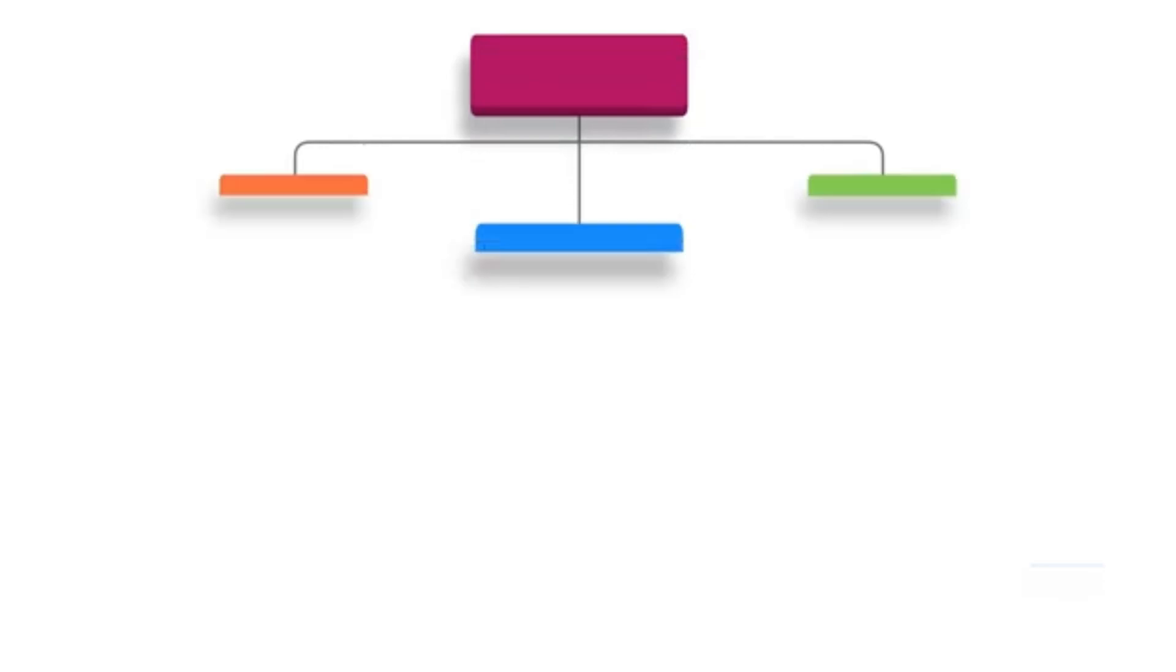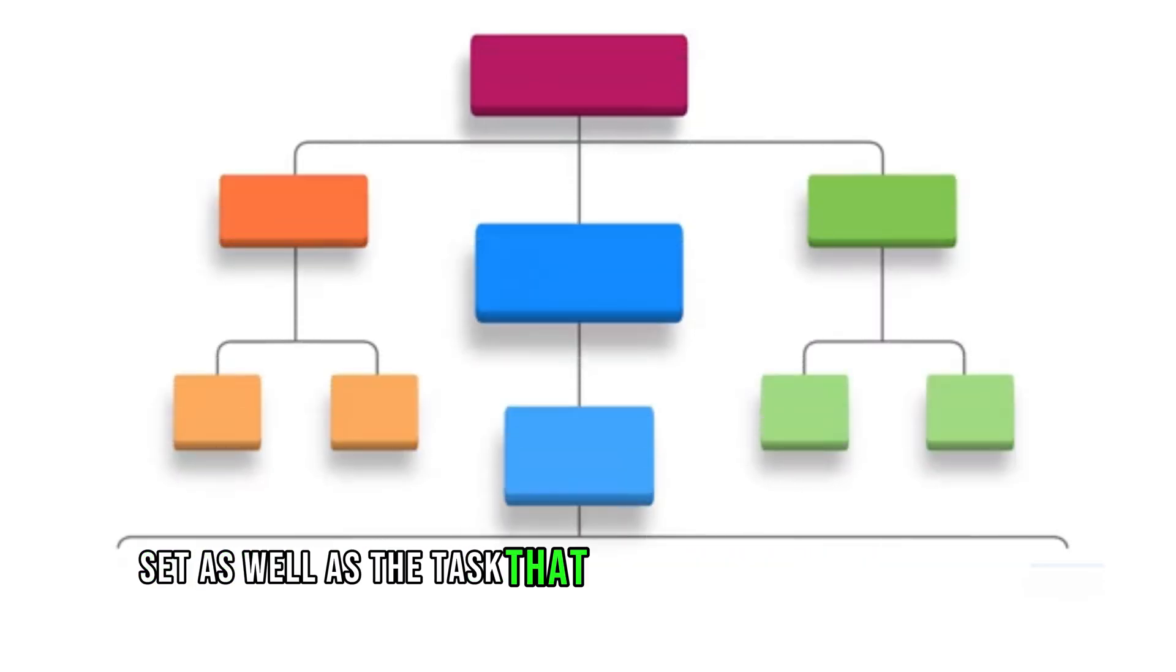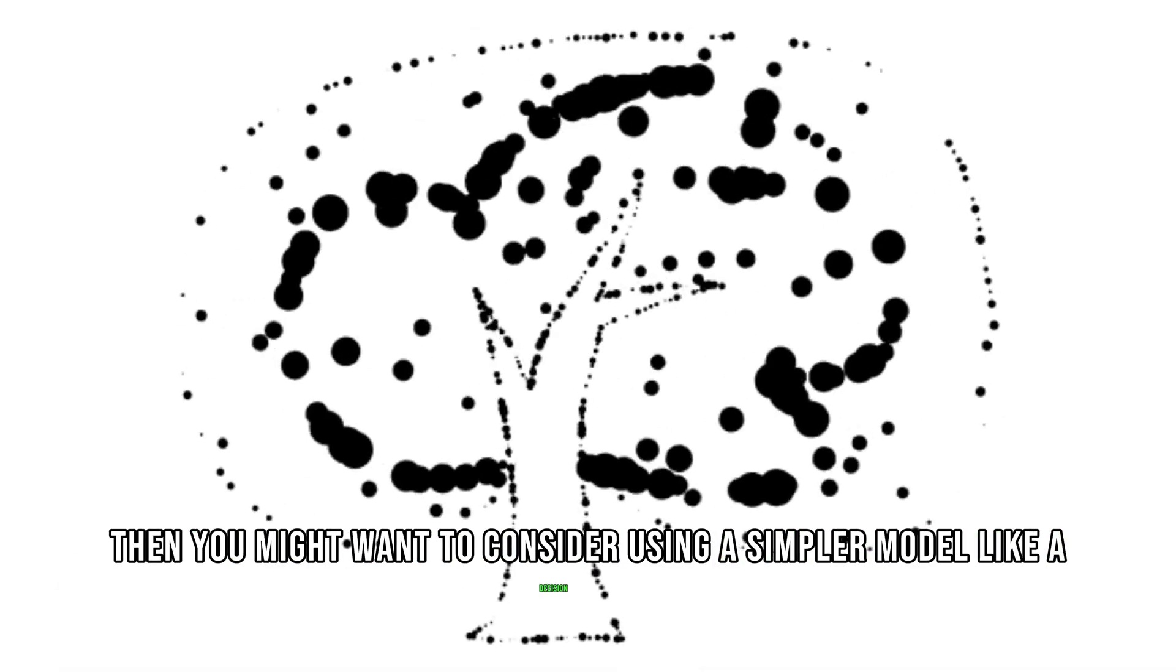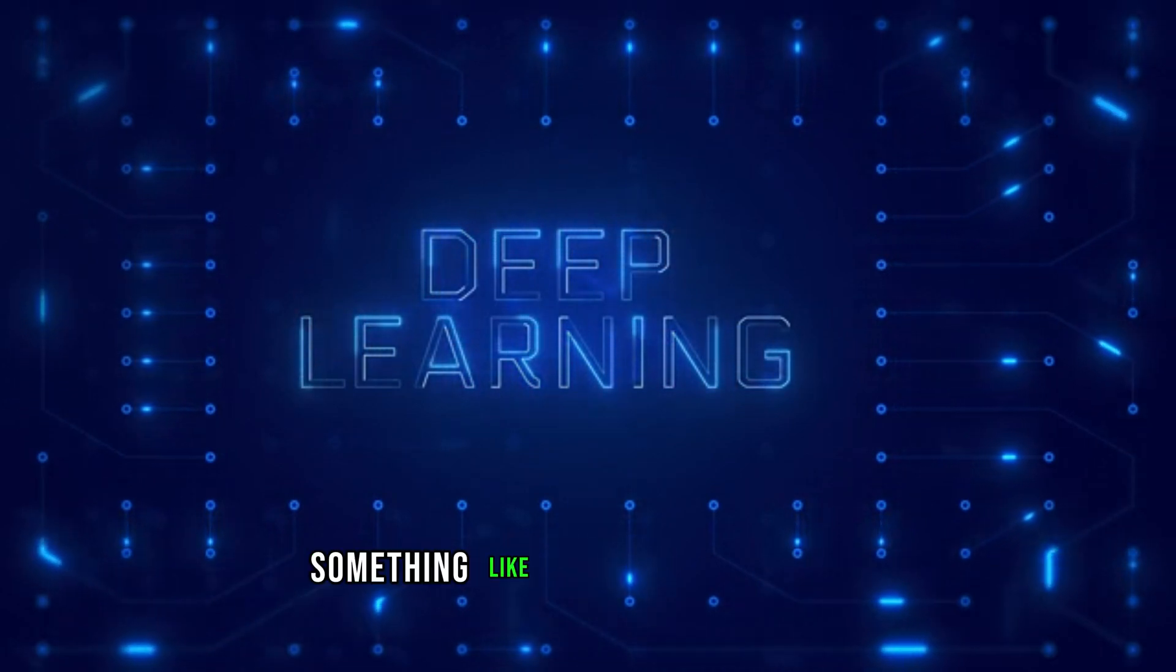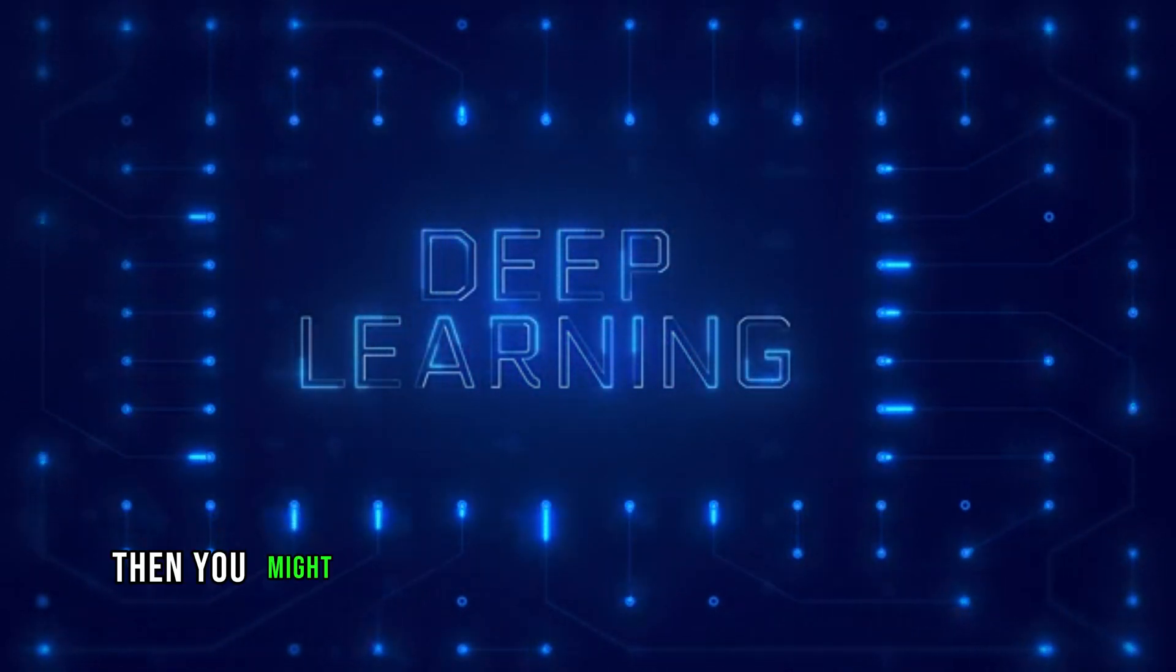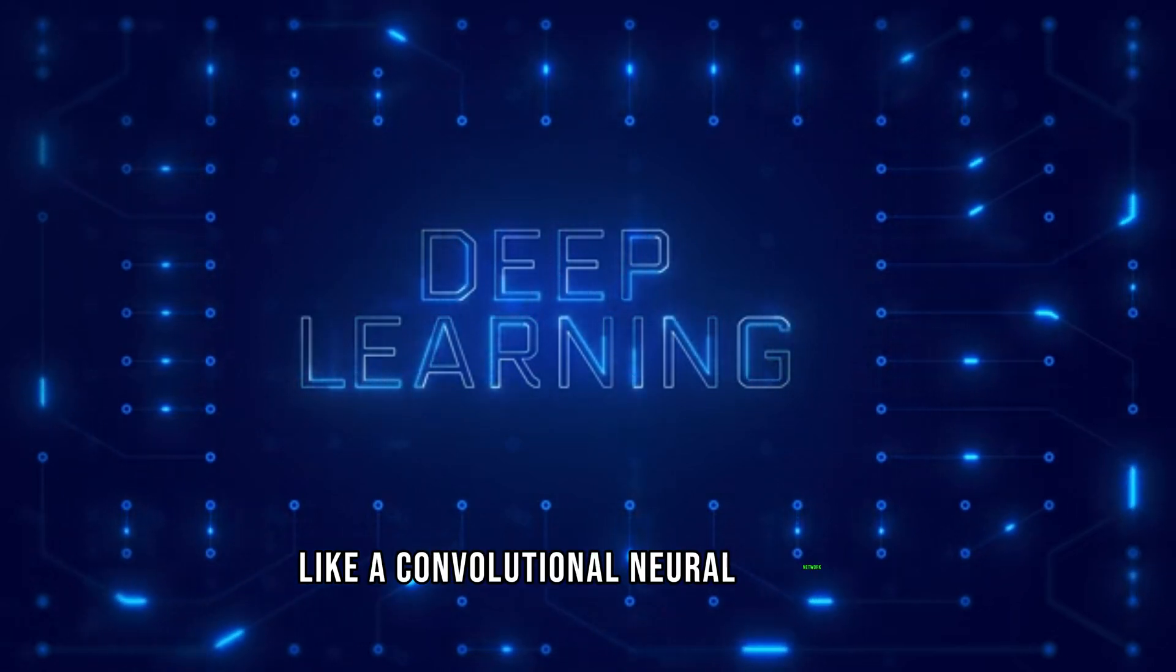When choosing a model, you want to keep in mind the size of your dataset as well as the task you're trying to accomplish. If you have a small dataset, you might want to consider using a simpler model like a decision tree. If you have a large dataset and you're doing something like image classification, you might want to consider using a deep learning model like a convolutional neural network.